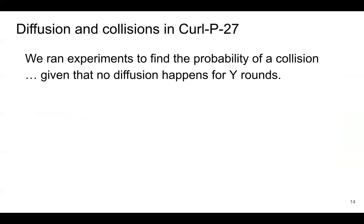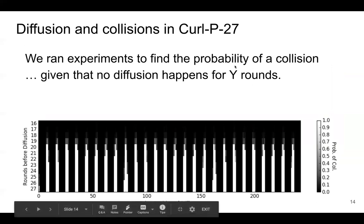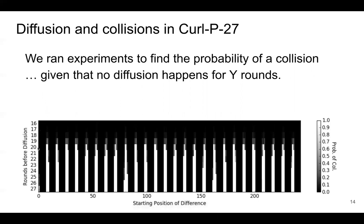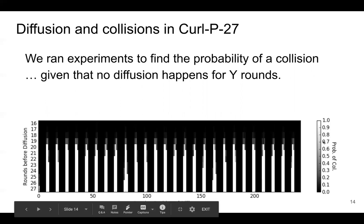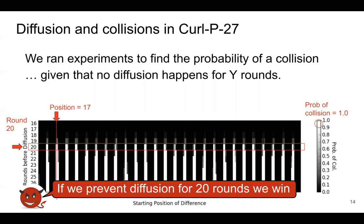To figure out how many rounds we need to arrest diffusion and where to put our one-trit difference, we ran a large number of experiments. The x-axis shows the position of the one-trit difference, the y-axis shows the number of rounds before diffusion occurs, and the color represents the probability of a collision. For position 17, if we prevent diffusion up until the 20th round, the probability of a collision is basically one — guaranteed. So if we can prevent diffusion for 20 rounds, we will cause a collision.